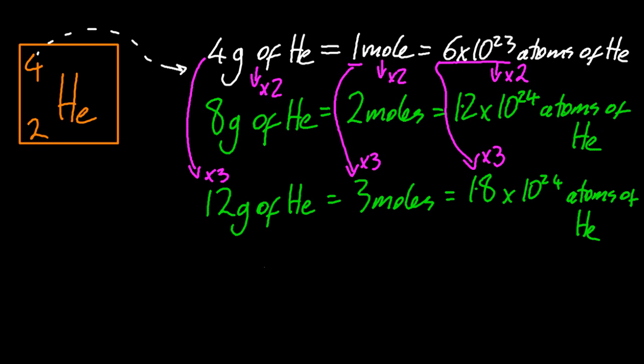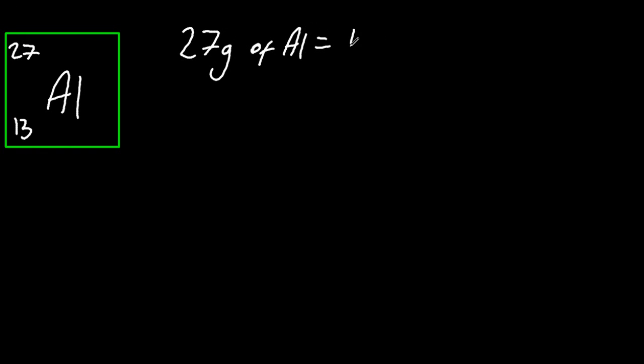Let's look at another example. So for aluminum, 27 grams of aluminum is 1 mole, and 1 mole is always 6 times 10 to the 23, in this case aluminum atoms.